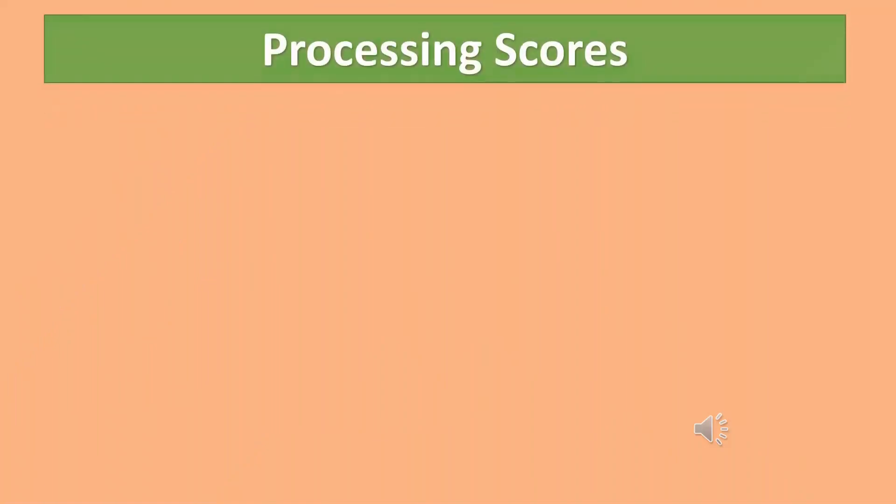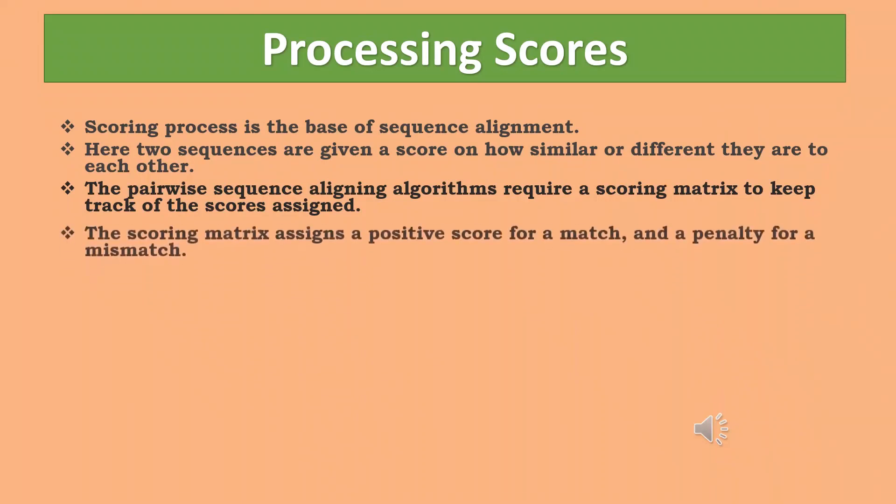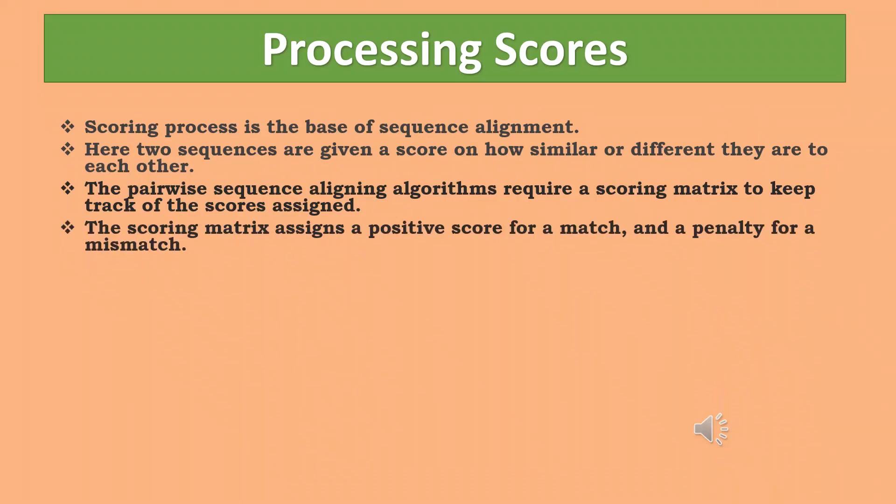Let us see the processing scores to align sequences. Scoring process is the base of sequence alignment. Here, two sequences are given a score on how similar or different they are to each other. The pairwise sequence aligning algorithms require a scoring matrix to keep track of the scores assigned. The scoring matrix assigns a positive score for a match and a penalty for a mismatch.